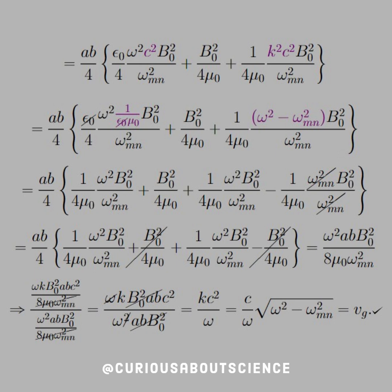So in the electric part, we substitute in the fact that we have c squared for 1 over epsilon naught mu naught. So the epsilon naughts in the electric part cancel. Good to go there. And then in the k squared, c squared, we substitute in omega squared minus omega mn squared. Again, color coordinated.